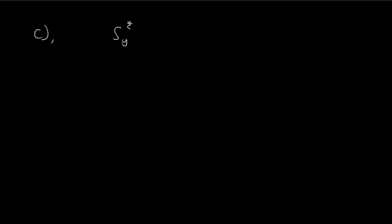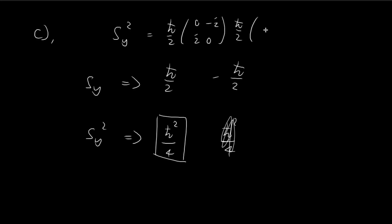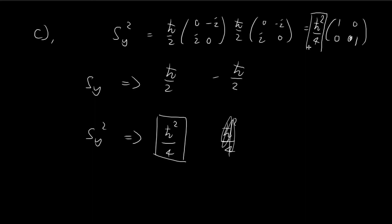Finally, for part C, we consider Sy² and want to know what values can be obtained and with what probability. Since measuring Sy gives either ℏ/2 or −ℏ/2, measuring Sy² always gives (ℏ/2)² = ℏ²/4, with probability 1. This can also be confirmed by explicitly multiplying the Sy matrix by itself to get (ℏ²/4) times the identity matrix, whose only eigenvalue is ℏ²/4.